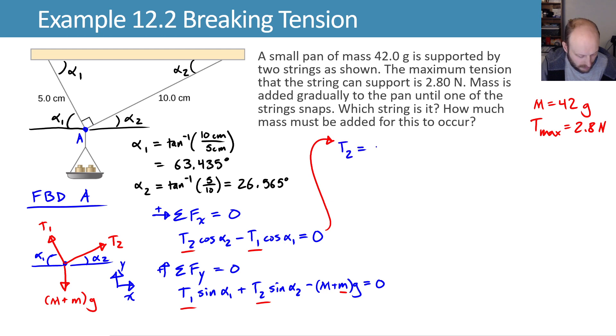I can say that t2 is equal to t1 times the cosine of alpha 1. So if I add t1 cosine alpha 1 to both sides and then divide by cosine alpha 2, we have divided by cosine alpha 2.